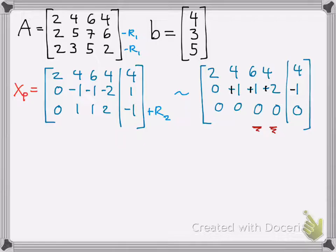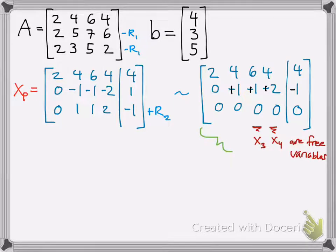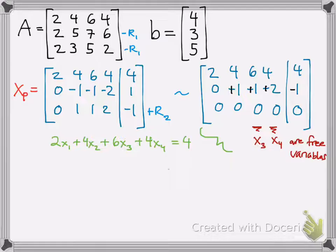Now, those columns — there are three of them — contain the three variables, x3 and x4. Those are the free variables. What we're going to want to do is set all our free variables equal to 0. But first, let's write out the equations. The matrix represents a system of equations, so we write out the equations for those lines. 0 equals 0 would be the last one, but no need to write that. We have our equations now.